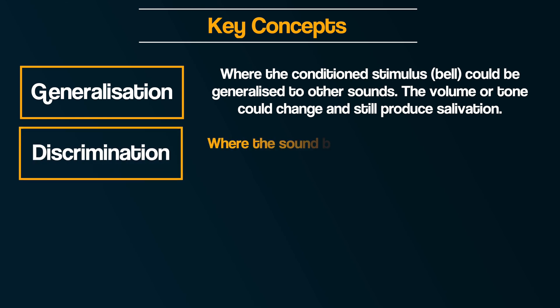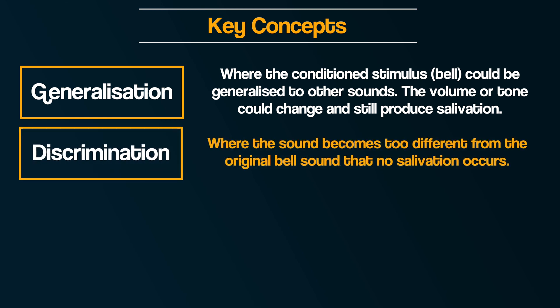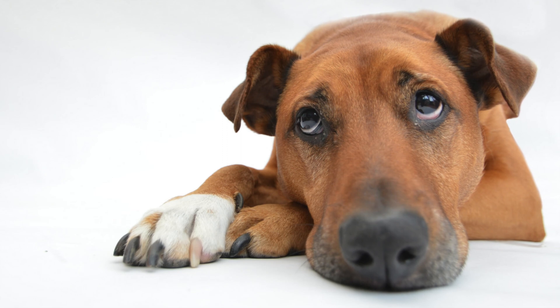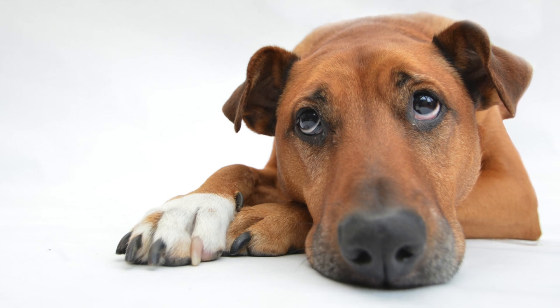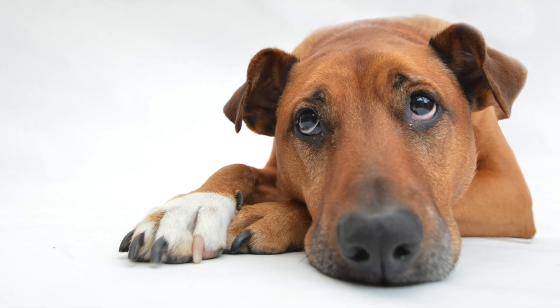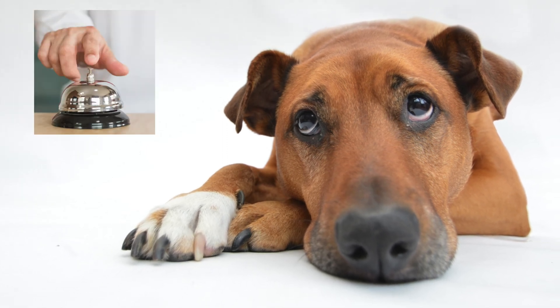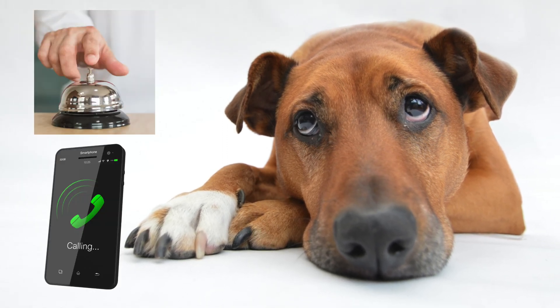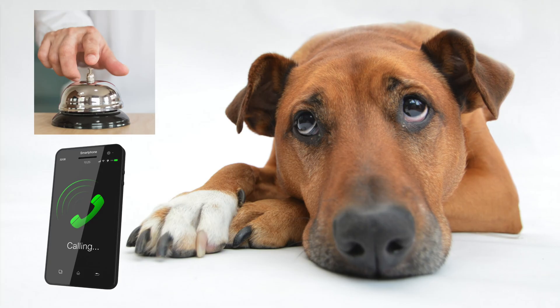Secondly, discrimination. This is where the sound becomes too different from the original bell sound that no salivation occurs. For example, the dogs might be able to make a distinction between the sound of a bell and the sound of a phone ringing.